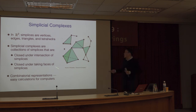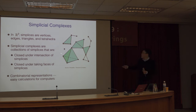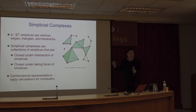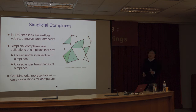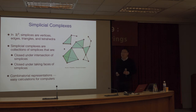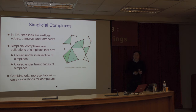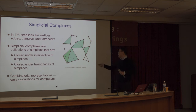A simplicial complex is a collection of simplices. Lower-dimensional simplices include vertices, edges, triangles, and tetrahedra. In higher-dimensional spaces there are more complicated simplices. A simplicial complex is a collection of simplices closed under taking intersections; if a tetrahedron is included, all of its faces — triangles, edges, and vertices — are also included. Because the data is represented in a combinatorial way, it can be easily handled by computing.